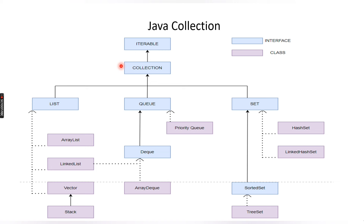In the Java Collection Framework we already learned about the List interface and Set interface. We know that List interface is implemented by classes ArrayList, LinkedList, Vector, and Stack. We also know the Set interface is implemented by classes HashSet, LinkedHashSet, and TreeSet. We have already covered each of these classes in our previous videos.